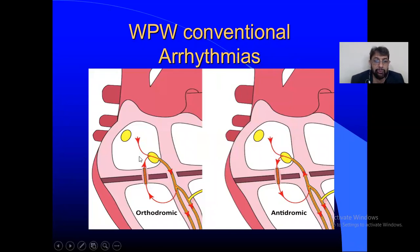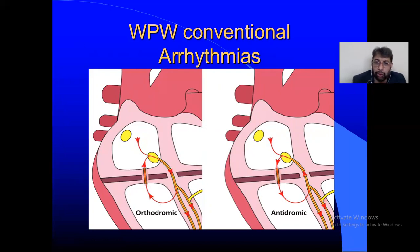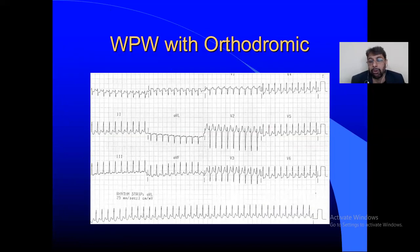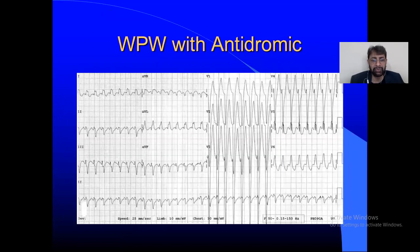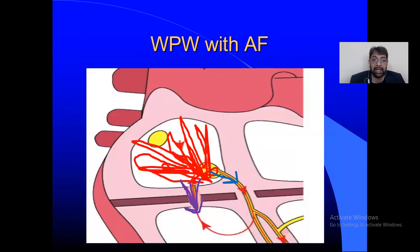For beginners: in WPW there is a pre-excitation or accessory pathway alongside the AV node. If a circus movement occurs with antegrade conduction through the AV node and retrograde through the accessory pathway, you get orthodromic tachycardia — narrow QRS and very fast rate. If antegrade conduction goes through the accessory pathway and retrograde through the AV node, you get antidromic tachycardia — broad complex. Simply: orthodromic = narrow complex (antegrade via AV node); antidromic = broad complex (antegrade via accessory pathway).